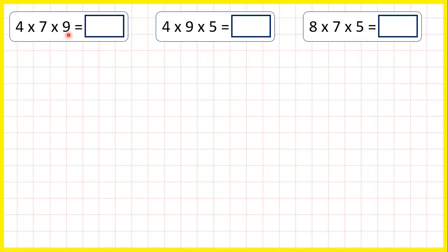So we could start by multiplying the larger numbers together first. 9 times 7 is 63, and then we can take that answer, so take 63, and multiply it by the other number in our question. So multiply 63 by 4.